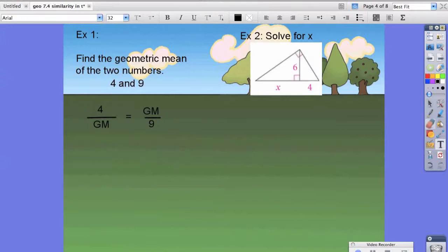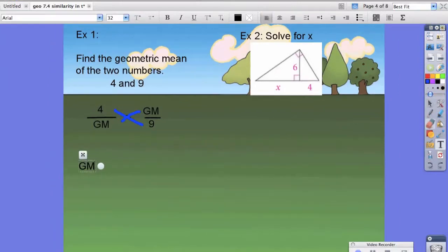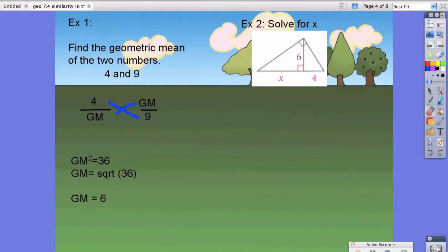When we take the cross product of these things, we're left with gm squared equals 36. Then gm is equal to the square root of 36. So we know that our geometric mean is equal to 6. That should be a fairly basic problem.